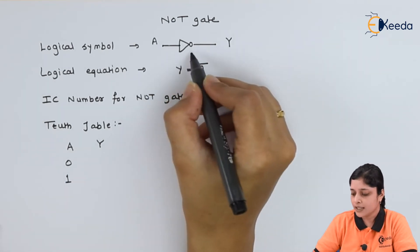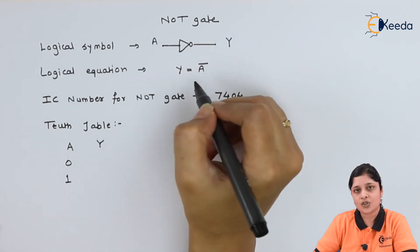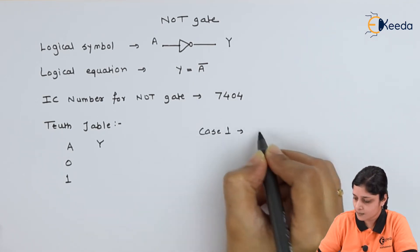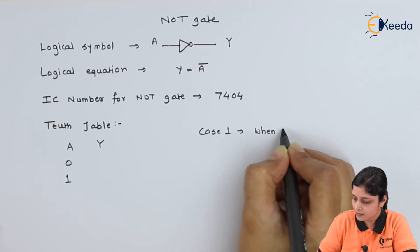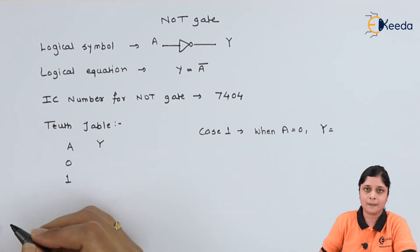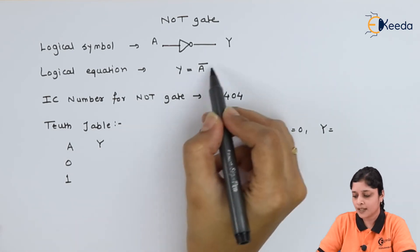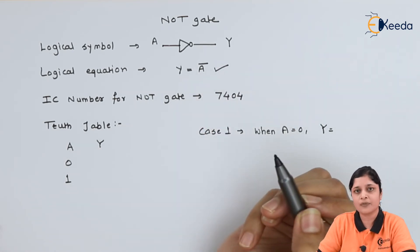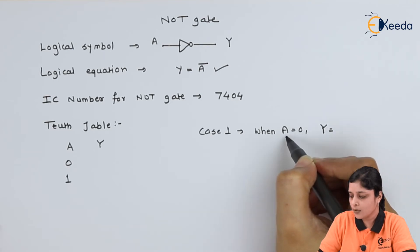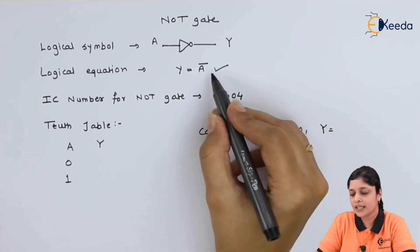According to its logical symbol and logical equation, we will discuss case 1. When A equals to 0, you have to calculate the Y. You have to put here in the logical equation and get the answers accordingly. When A equals to 0, you will get the complement of 0, so complement of 0 is 1.